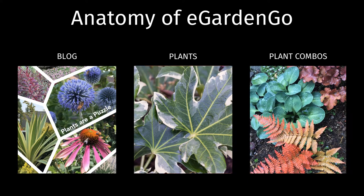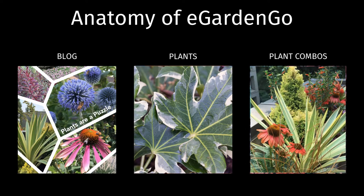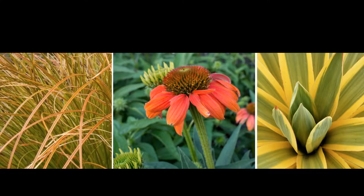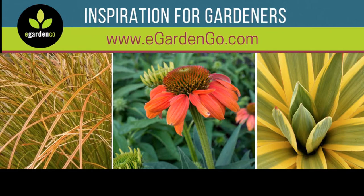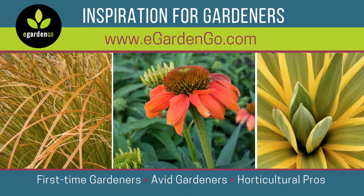The typical combo includes three to six plants that are commercially available, illustrated with photos that are clear and easy to digest. eGarden Go provides ideas and inspiration for gardeners of all levels, from beginners and first-time gardeners just starting out to avid gardeners and horticultural pros, who are also regular users of our site.